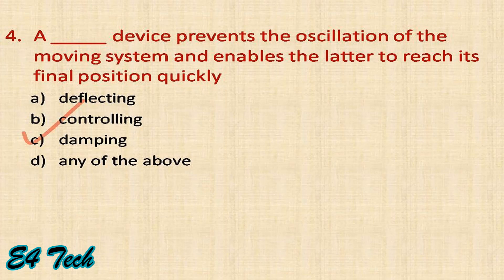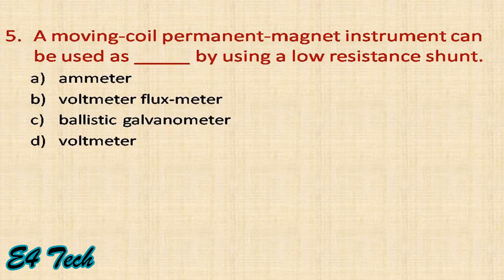A moving coil permanent magnet instrument can be used as an ammeter by using a low resistance shunt. The low resistance shunt is used to convert it to an ammeter by bypassing the majority of current.